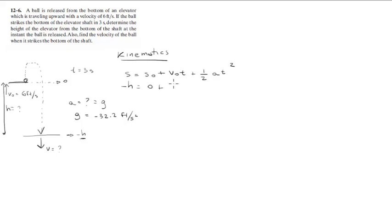v0 is 6. The time it took is 3 seconds. Plus 1/2 times negative 32.2, which is the acceleration of gravity.